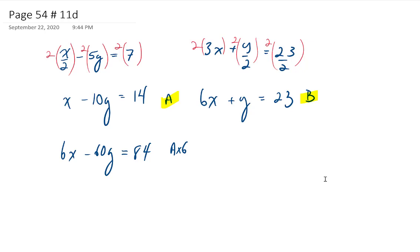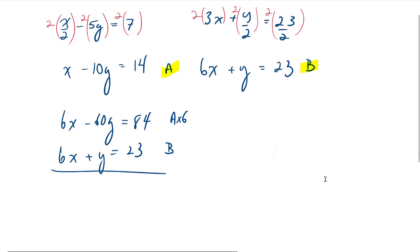I'm going to rewrite expression b below it. 6x plus y equals 23. That is equation b. And now if I subtract,